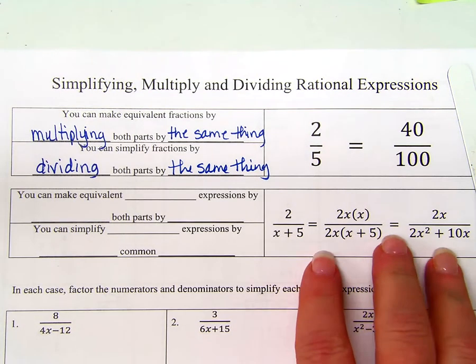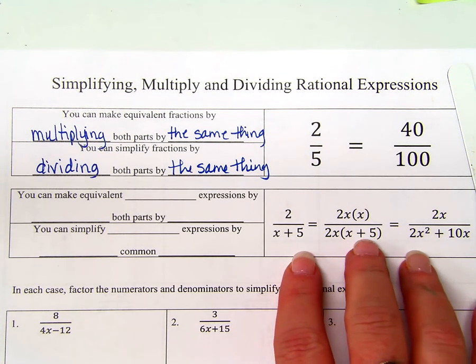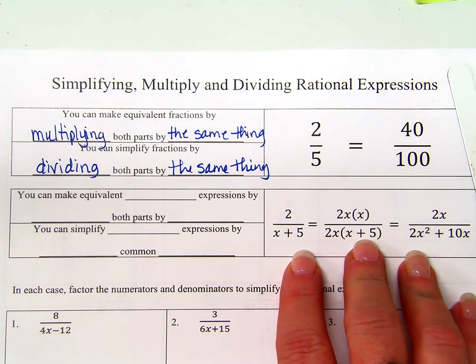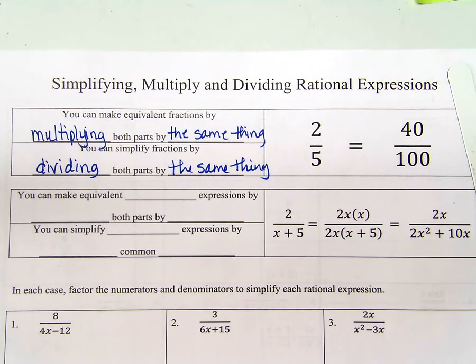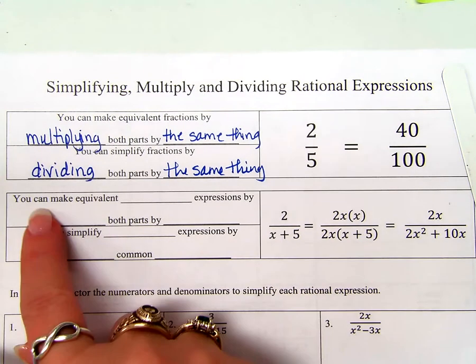Numerator and denominator, right? Both parts of the rational expression are both parts of the fraction. Fair enough? What if I'm going backwards? This way to this way? Dividing both parts by? Good.